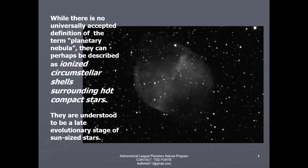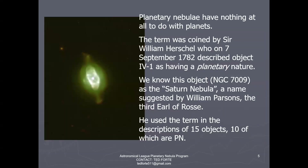There's really no official definition of planetary nebula, but a good description would be an ionized circumstellar shell surrounding a hot compact star. Since about 1956, they've been understood to be a late evolutionary stage of sun-sized or intermediate mass stars. They have nothing at all to do with planets. The term planetary nebula comes from Sir William Herschel, who in September of 1782 discovered the object we know as the Saturn Nebula. He didn't know exactly how to classify it, so he created a new class that would eventually become known as planetary nebula. He used that term planetary just as a descriptor — it meant they were kind of round, kind of looked like a planet, and held magnification like a planet.